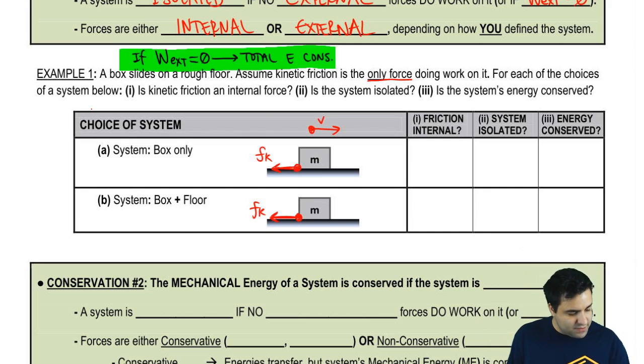For each one of these choices of the system below, we're going to ask a bunch of yes or no questions here. So first we're going to say that we want to call the system just the box. And then we're going to say the system is the box with the floor. It's a little bit more inclusive of a system there. So here, is friction internal? No, friction is not internal.